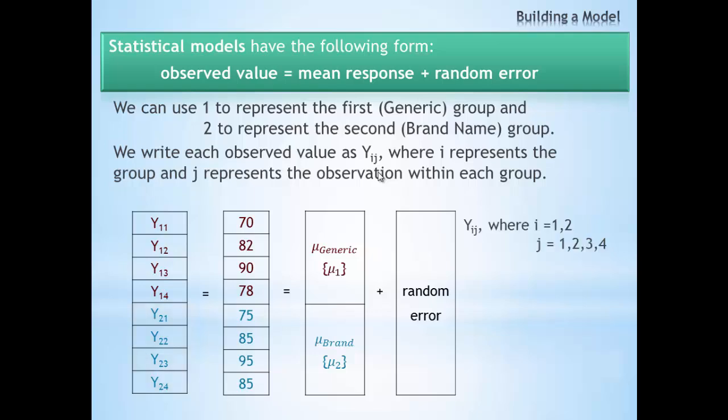Often, we can write this more generally just saying our observed responses are y_ij, where i is 1 or 2 and j is 1, 2, 3 or 4.